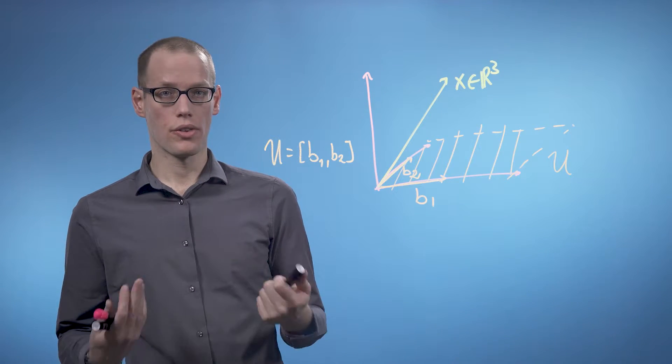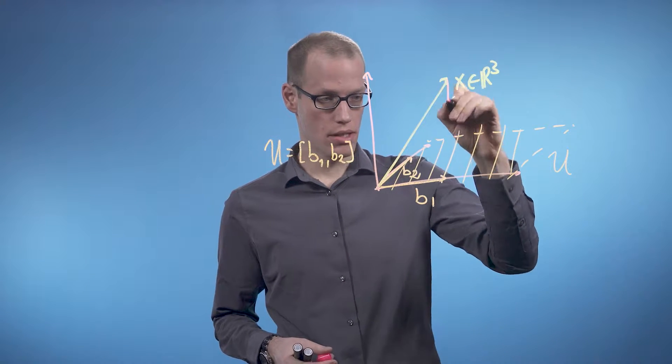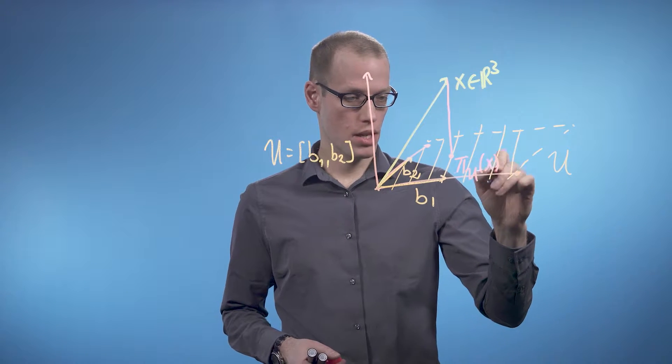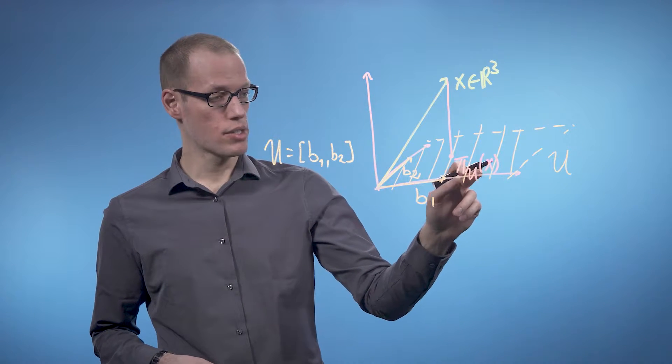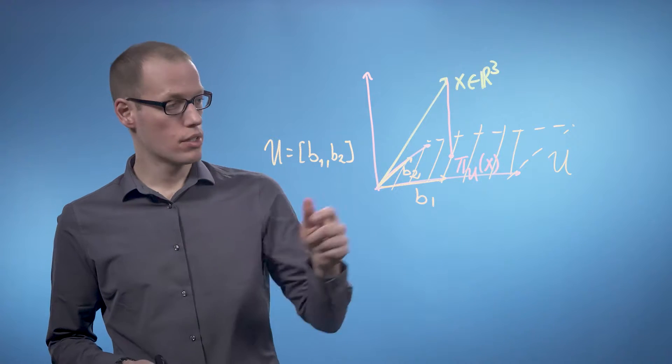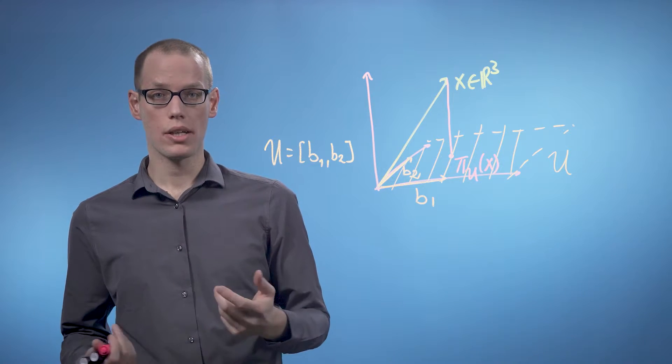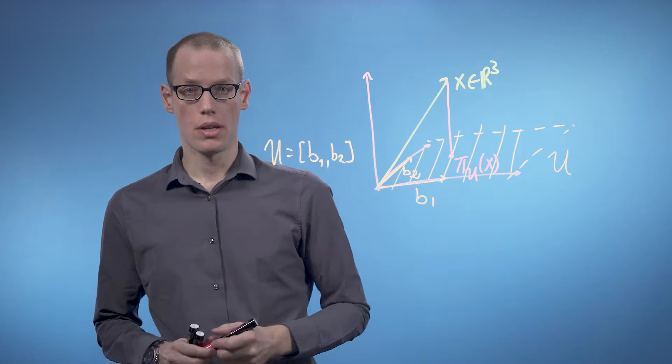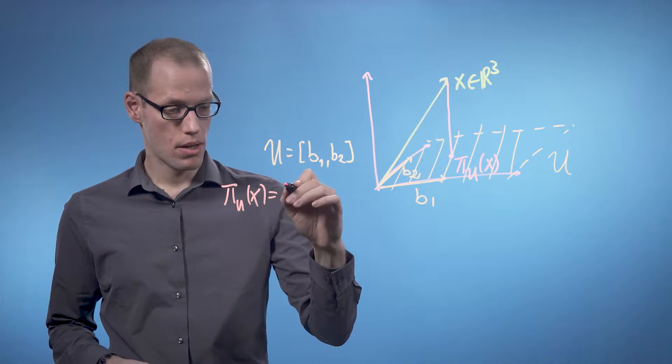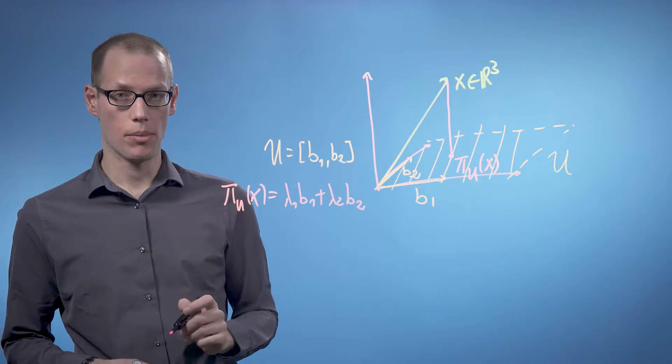So now we are looking at the orthogonal projection of x onto u, and we're going to denote this by π_u(x). So that projection is going to look something like this. That's the projection point. So we can already make two observations. The first thing is that because π_u(x) is an element of u, it can be represented as a linear combination of the basis vectors of u. So that means we can write π_u(x) is λ_1 times b_1 plus λ_2 times b_2 for appropriate values of λ_1 and λ_2.